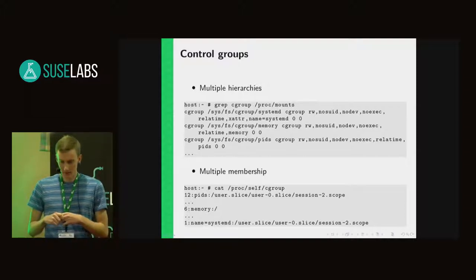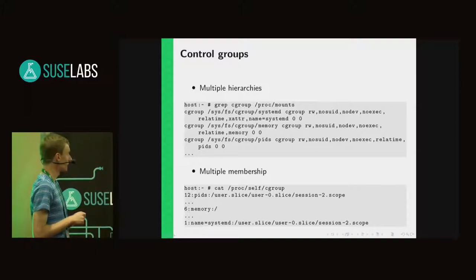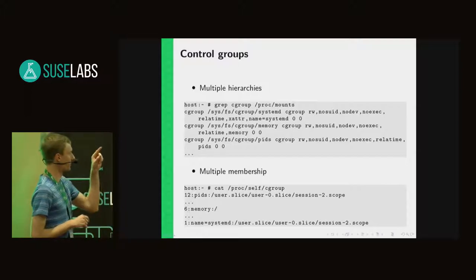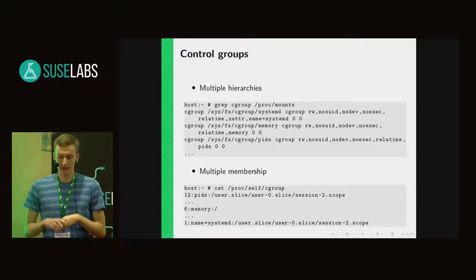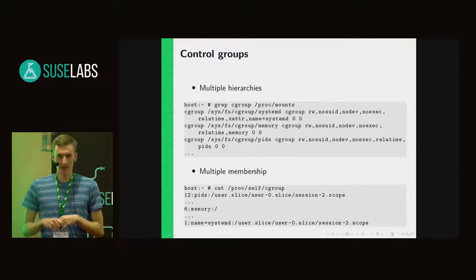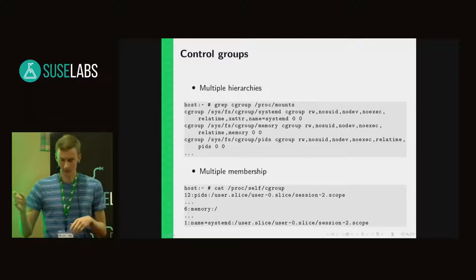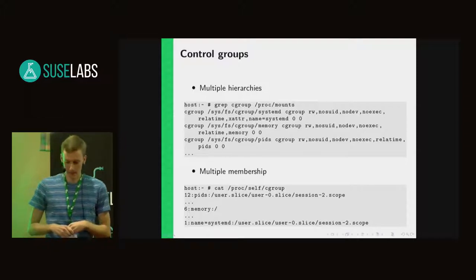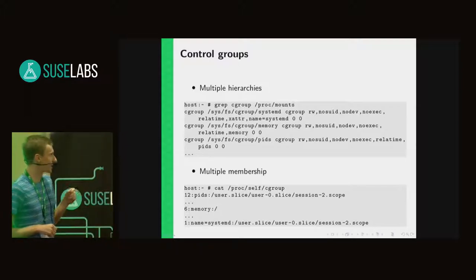I want to point out the first one. If you look at the last option of the mount, there is just 'name equals systemd'. This is a so-called named hierarchy that has no controller attached to it, and it serves just for the purpose of grouping the processes together. If you want to check the cgroups a process is in, you can check it in the procfs file system. This sample process is in multiple hierarchies, as I said, and not all hierarchies are the same.